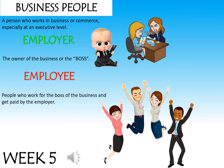Let's talk about business people. A business person is someone who works in business or commerce, especially at an executive level. There are two types to remember: an employer and an employee. Notice the difference in spelling. An employer, shown in green with ER at the end, is the owner of the business, also known as the boss. An employee, with double E at the end, refers to people who work for the boss and get paid by the employer. If mommy and daddy are the boss of a company, they pay their employees. If they have a boss, then they are the employee.